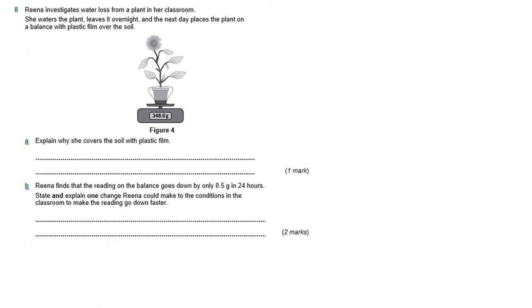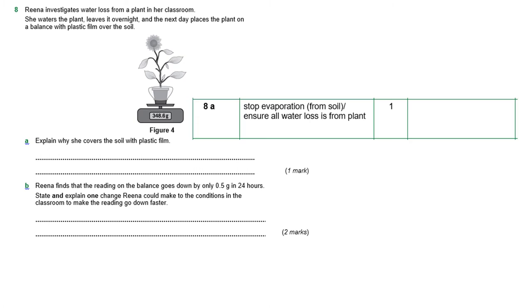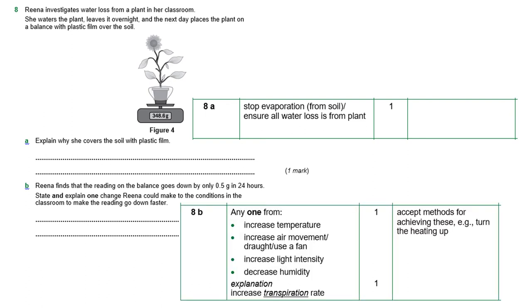Okay, so the last question is about transpiration. And the reason that she has covered the soil with the plastic film is to stop any water evaporating from the soil, which means any water leaving that plant has to have come out of the stomata on the leaf. So the water will be lost by transpiration only. And she's found that she gets 0.5 grams in 24 hours. And they want to know what you could do to conditions to make that go faster. You have to state and explain why that makes a difference. So there are different options. So you could choose that you increase the temperature, and the explanation is that it increases the transpiration rate. Now the explanation is the same for all of these. So it could be increasing temperature, increasing the air movement, I'm talking about using a fan or a draft or a breeze, increasing light intensity, so making it brighter. But you need to increase light intensity or decreasing humidity, because remember that's where there's less moisture in the air.